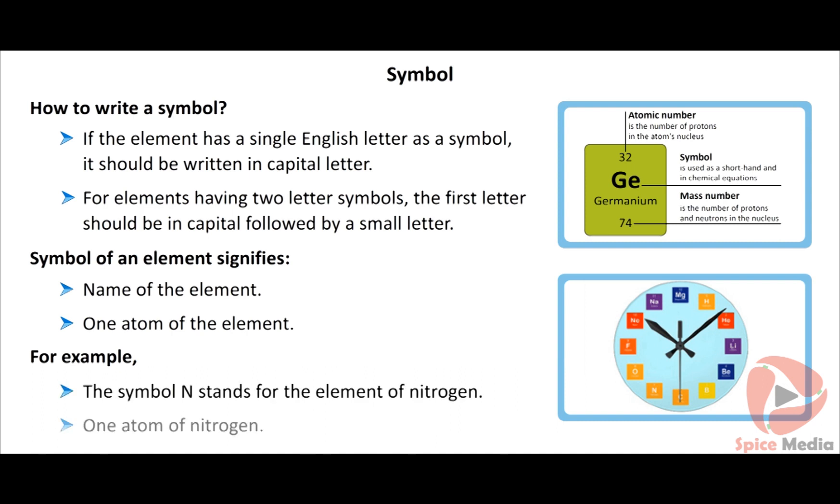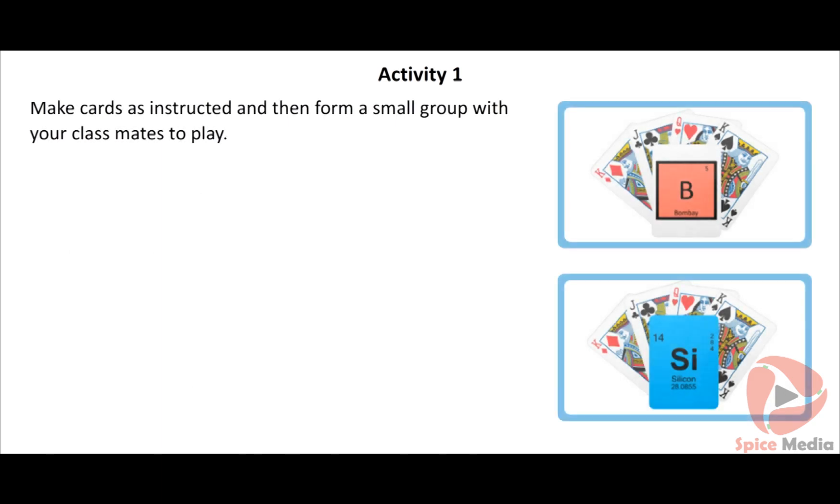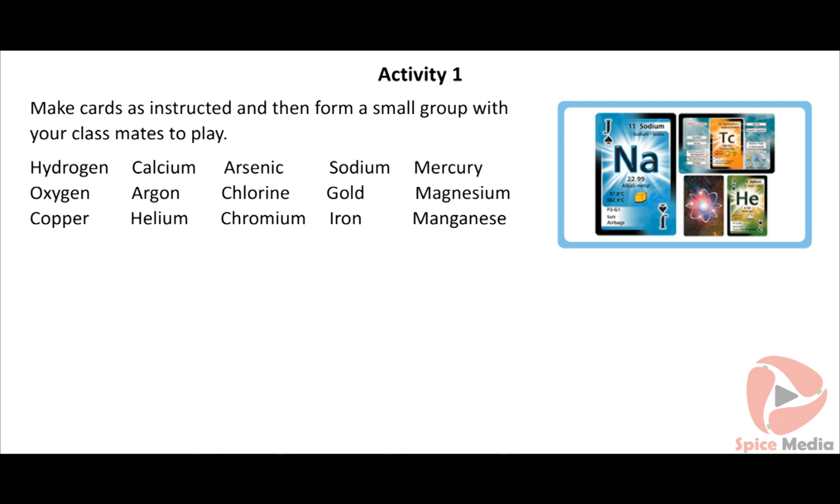Make cards as instructed and then form a small group with your classmates to play. Prepare 15 cards with the names of elements written on them and 15 cards with their corresponding symbols: Hydrogen, Calcium, Arsenic, Sodium, Mercury, Oxygen, Argon, Chlorine, Gold, Magnesium, Copper, Helium, Chromium, Iron and Manganese. Shuffle the 30 cards and place the cards face down on the table.